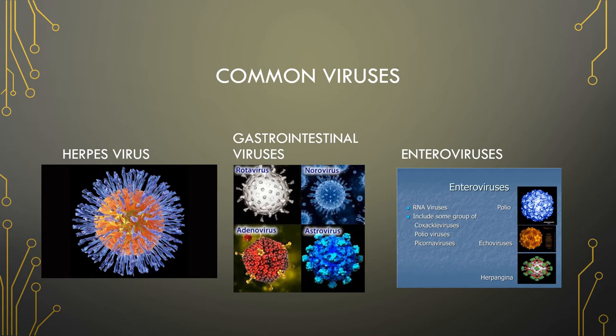Herpes virus 6 and 7 are closely related, although we can't prove herpes 7 has any harmful implications for humans. Herpes virus 6 has been directly linked with roseola and roseola infantum in infants, which causes fever and rash.